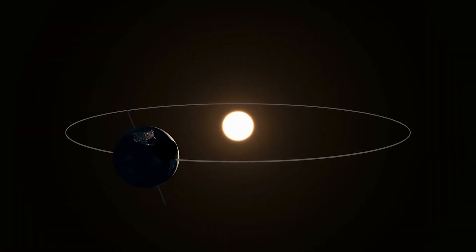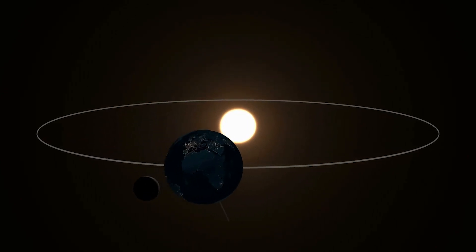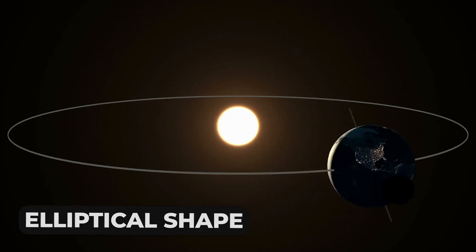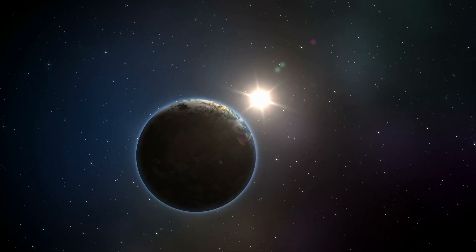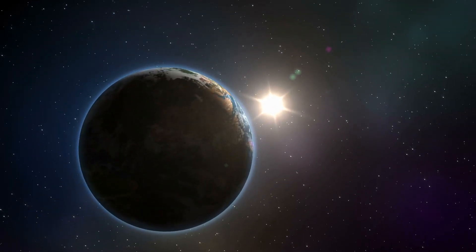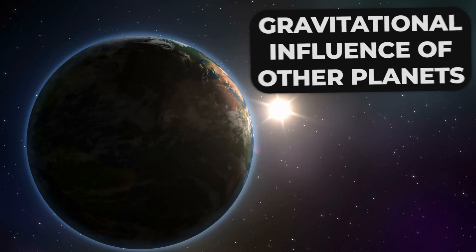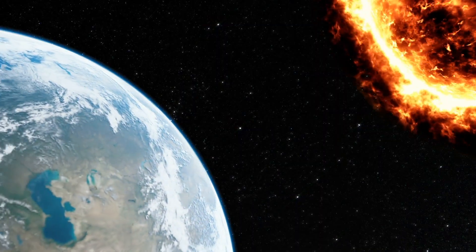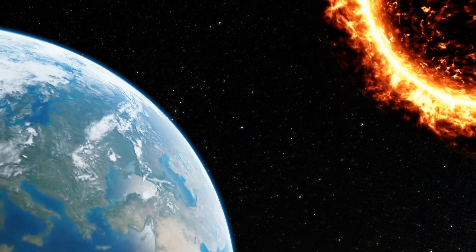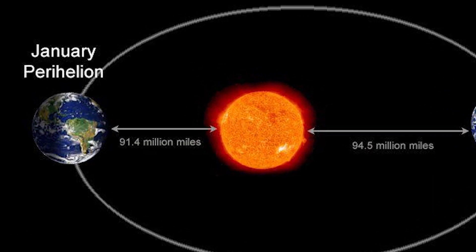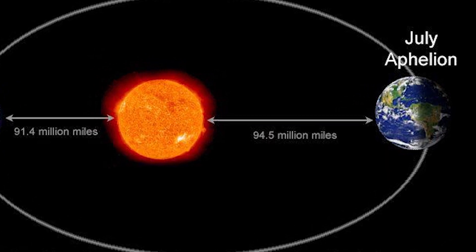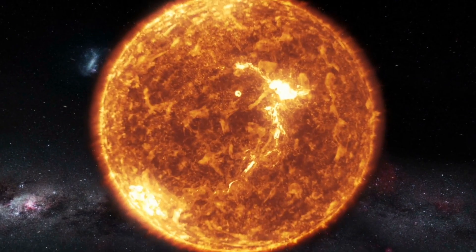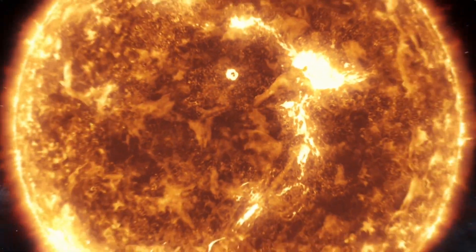The Sun's gravity also affects the Earth's route around the Sun, causing its orbit. The Earth's orbit is not a perfect circle, but rather an elliptical shape, with the Sun at one of its foci. The gravitational pull of the Sun keeps the Earth in orbit, and the size and shape of the orbit change over time due to factors such as the gravitational influence of other planets and the Sun's changing gravitational force. The Sun's gravity also influences how quickly the Earth travels around the Sun — the Earth moves fastest when it is closest to the Sun and slowest when it is farthest away.